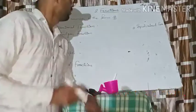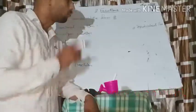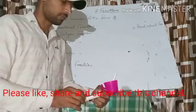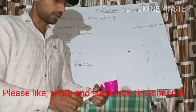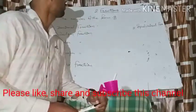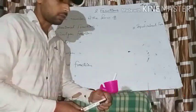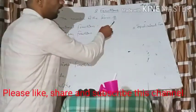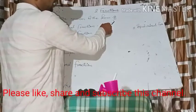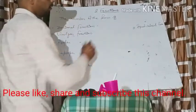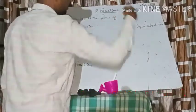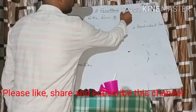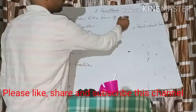Hello students, today we will start a new chapter whose name is Fraction. First of all we have to learn what is a fraction. A number of the form a upon b is said to be a fraction, where a is the numerator and b is the denominator.